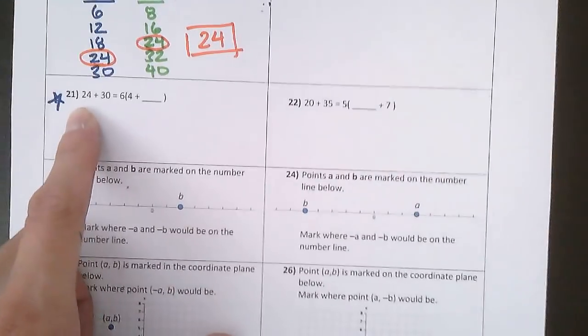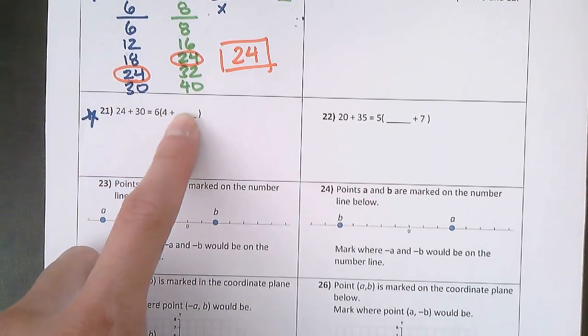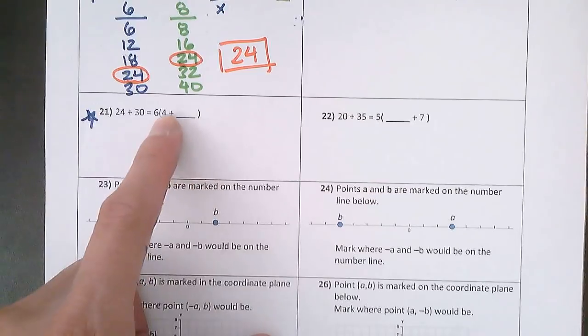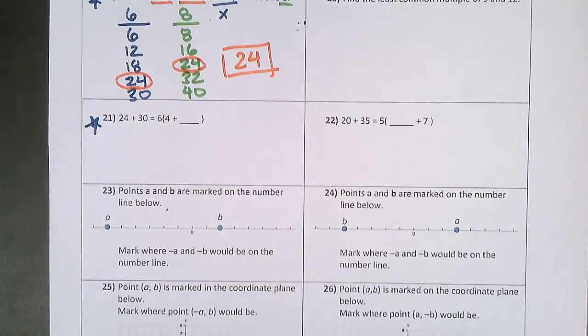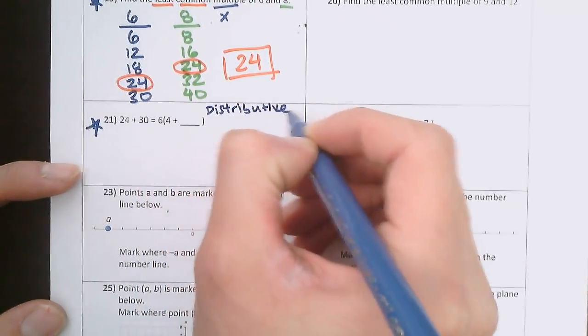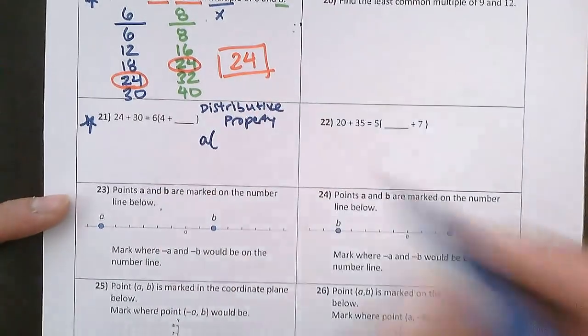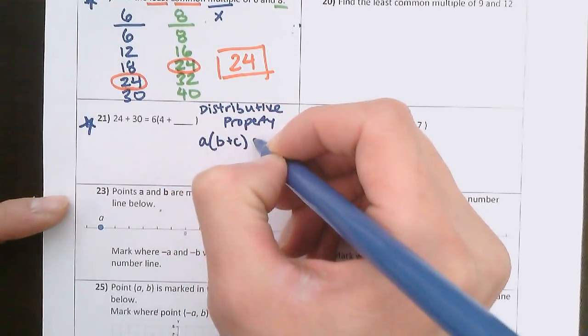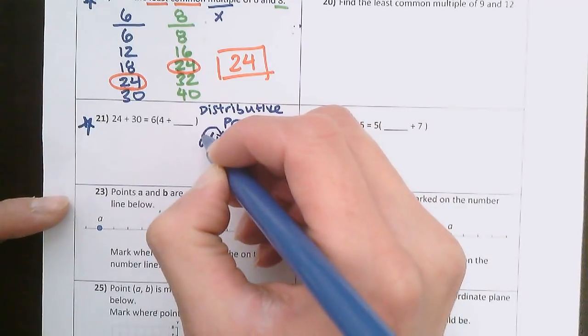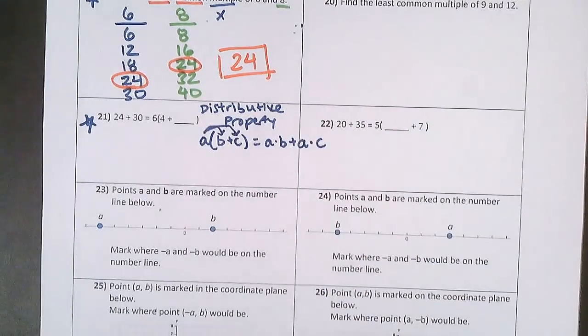For number 21, it says 24 plus 30 is equal to 6 and then in the parentheses 4 plus blank. Anytime you see a number outside of parentheses and then inside the parentheses is two numbers added together, I want you to think distributive property. And what that says is if I have a times, in parentheses, b plus c, that's the same thing as a times b plus a, whatever's on the outside, times the second number, a times c.